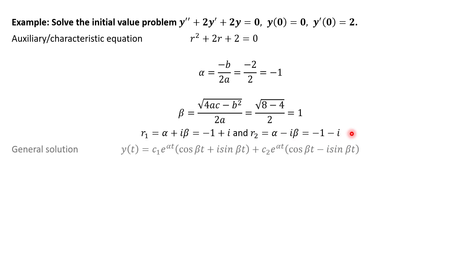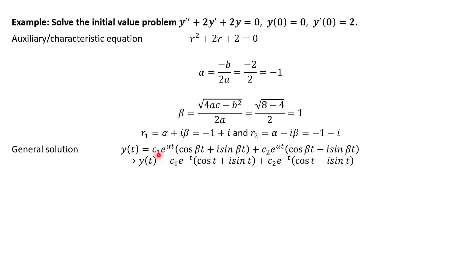Once we have those roots we plug them into our general solution. Nothing has changed yet, but now plugging in alpha = −1 everywhere there was alpha, and beta = 1 (an invisible 1) everywhere there was beta. If this were not an initial value problem I'd stop here with my general solution, but because we have initial conditions I'm going to keep going to find c₁ and c₂.